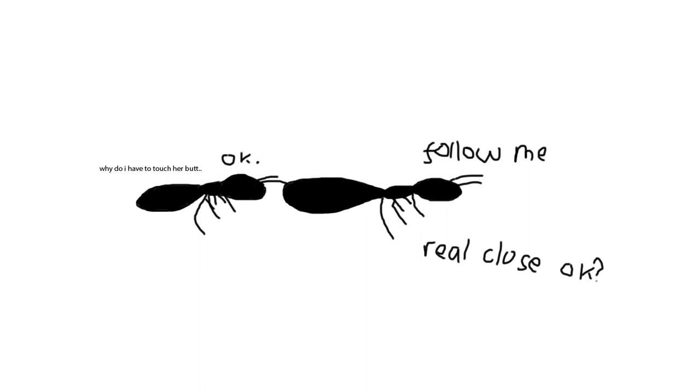Second, we have tandem running. This is similar to social carrying, but this time the scout does not pick up a nest mate, but instead leads one nest mate in a tandem pair, such that the antennae of the follower frequently touch the gaster of the leader.